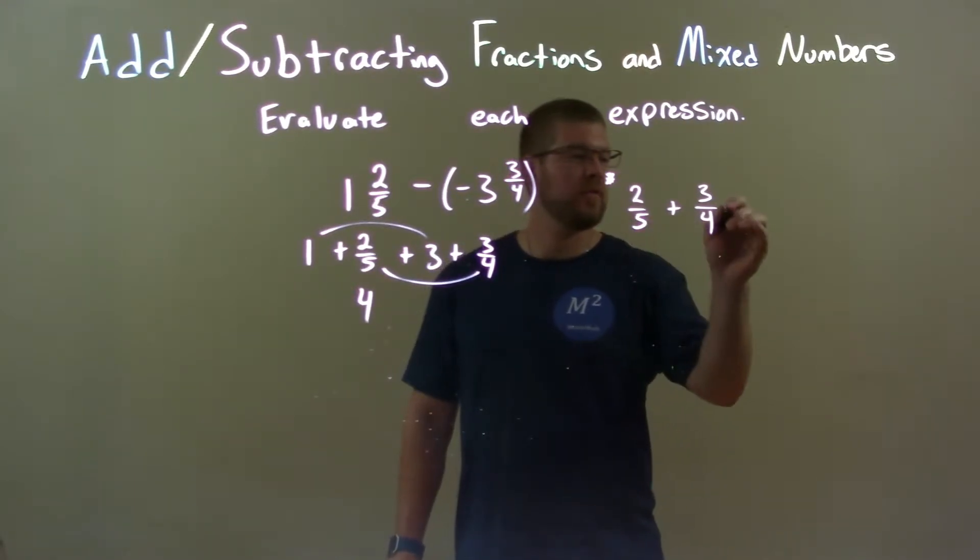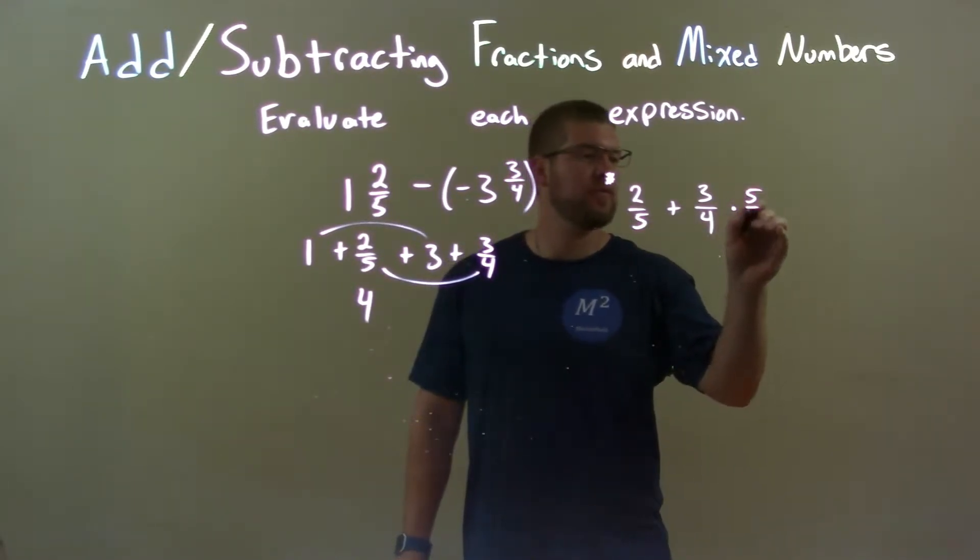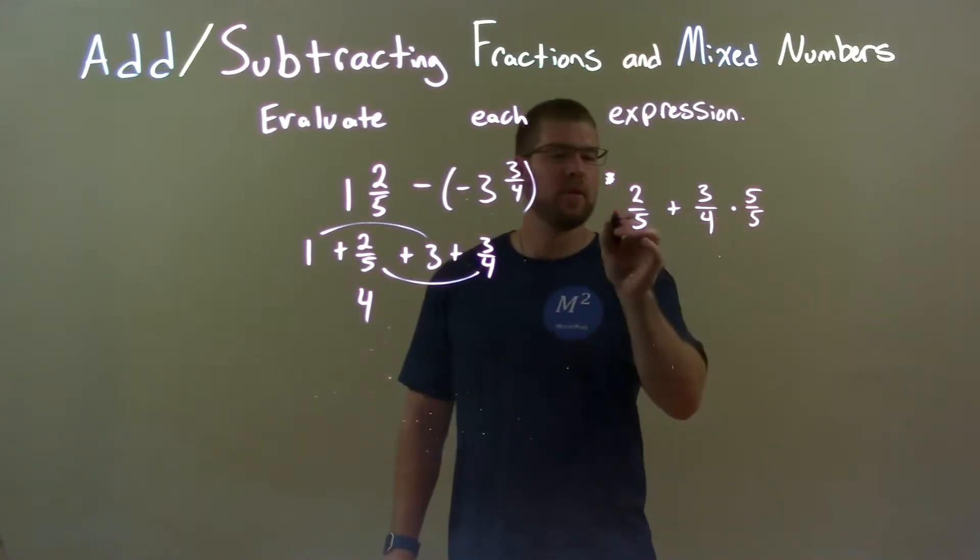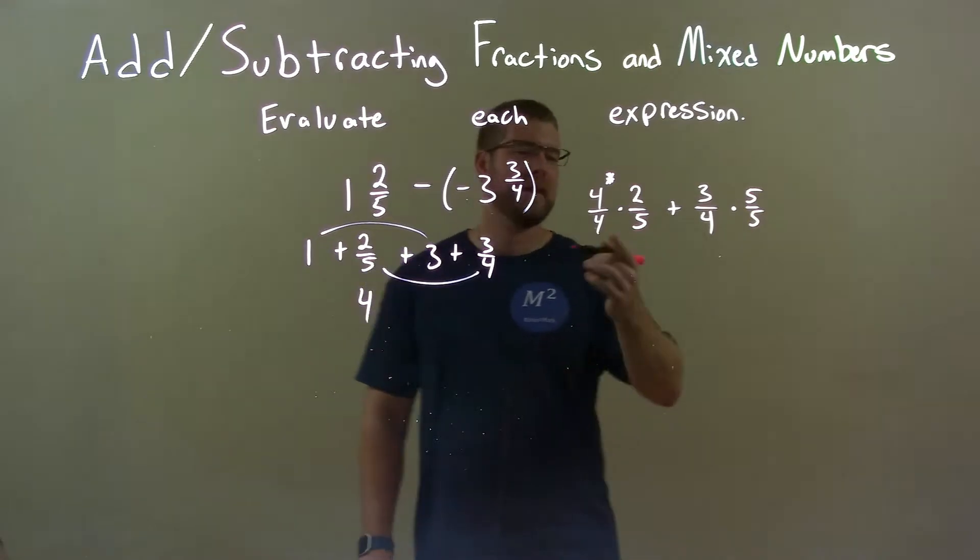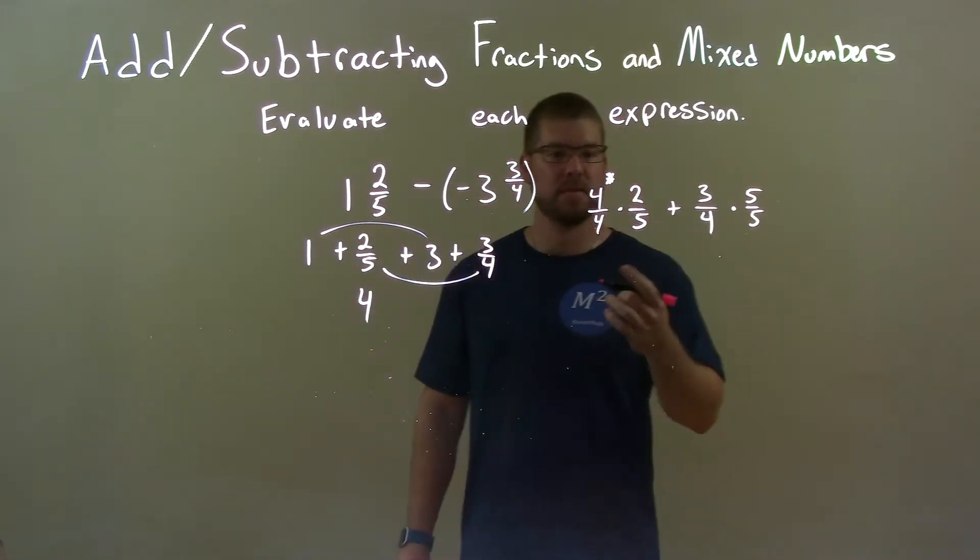So, what I can do is take this base, 5, and multiply the second number by 5 over 5. And then this 4, multiply the first number by 4 over 4. This will always ensure we have the same base, same denominator.